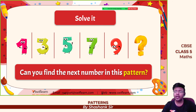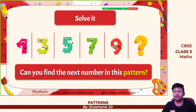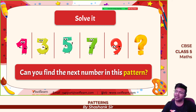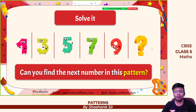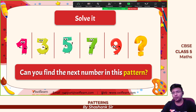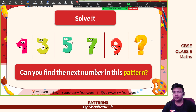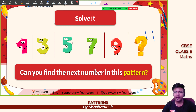Now: 1, 3, 5, 7, 9 — these are all odd numbers and we are adding 2 each time. So the next number will be 11. 11 is the answer.